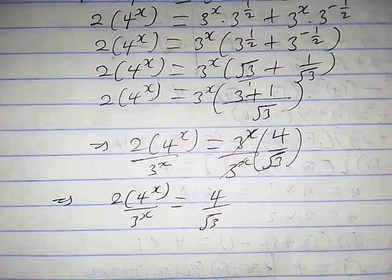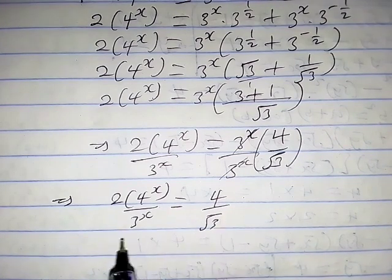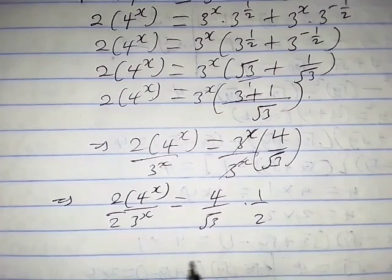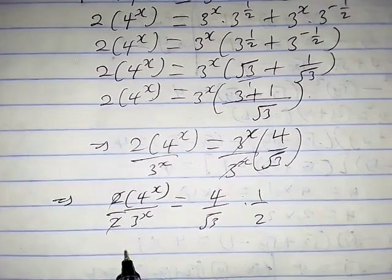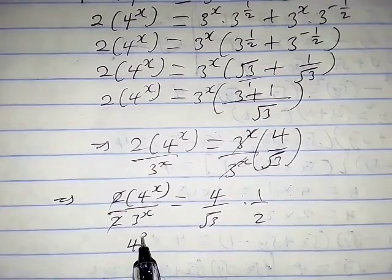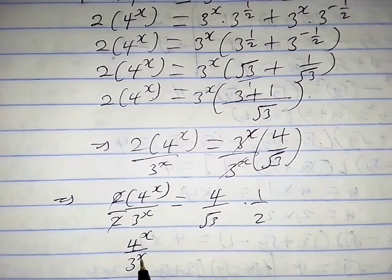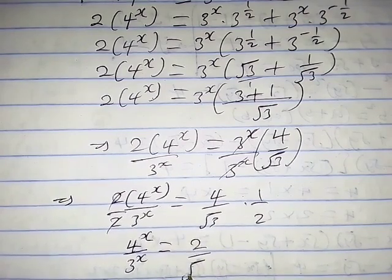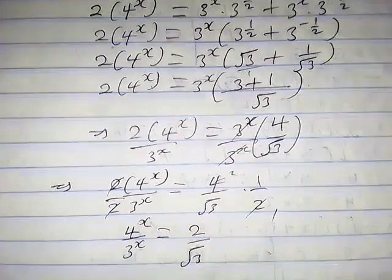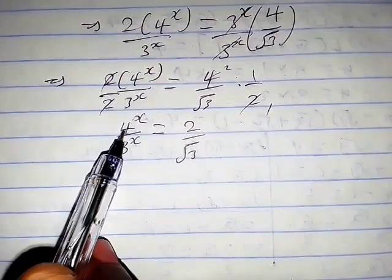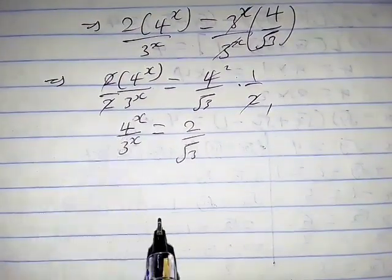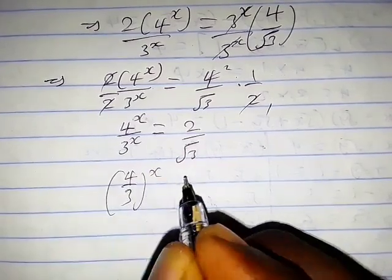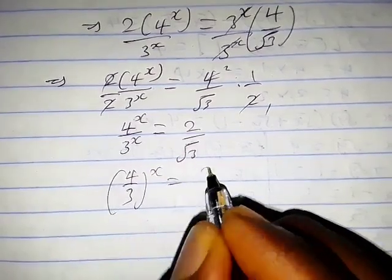Now let's also divide both sides of this equation by 2. The 2 cancels, so we are left with 4 raised to the power x over 3 raised to the power x equals 2 over square root of 3. By the laws of exponents, we can write this as 4 over 3, all raised to the power x, equals 2 over square root of 3.